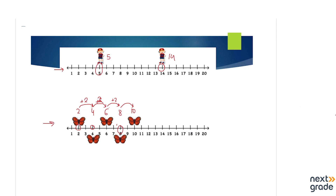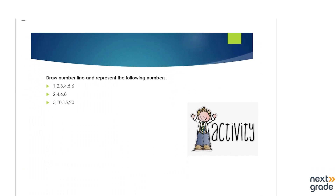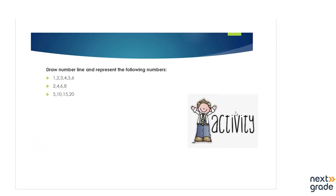We will move to the next slide to practice how to make a number line. In this part, we are going to draw a number line and represent the following numbers. First, we will make a simple number line so it will be easier to move to difficult ones. We are making a number line here — remember, when you show the numbers, make sure the distance is equal. This is 1, this is 1. Next number, draw equal distance: 2, 3, 4, 5, 6. This was a very simple number line as required in the question.